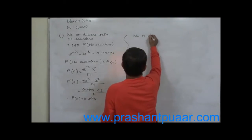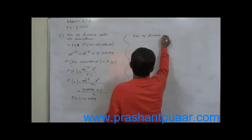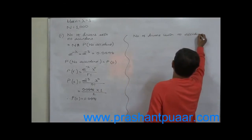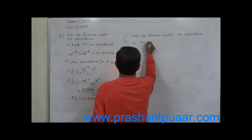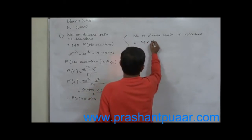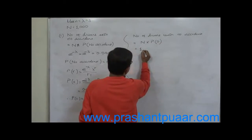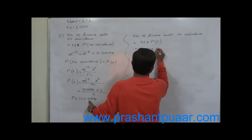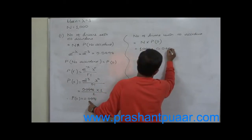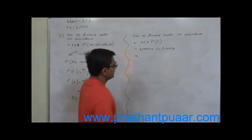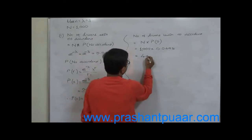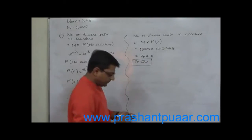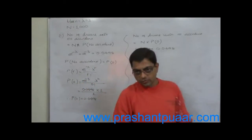The number of drivers with no accident equals N into P(0). That means 1000 drivers multiplied by the probability of no accident, 0.0498. So the answer comes to 49.8, which is approximately 50. That means we can expect 50 drivers without an accident in a year out of 1000.